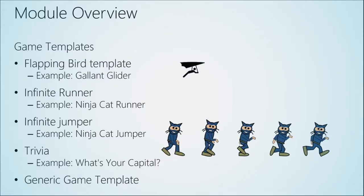The game templates we're going to talk about today are: the Flapping Bird template, from which we'll build our own game called Gallant Glider; then an infinite runner, with an example called Ninja Cat Runner showing different frames of the Ninja Cat character. Next we have an infinite jumper similar to Doodle Jump where the screen is always moving and platforms come down at you. Finally, we'll wrap up with a trivia template and a generic game template, which allows us to build any game.